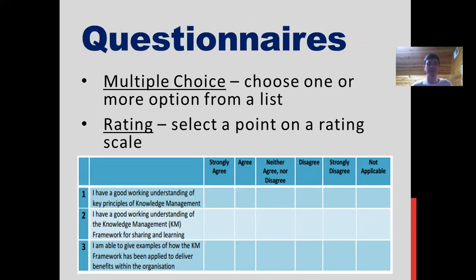Questionnaires are very popular and there are many different types of questions within that. Some of the more common ones are multiple choice and rating. With multiple choice, you select one or more options from a set list, and rating is where you select a point on a rating scale. The example shown has the user choosing from one of five different options as well as choosing not applicable.